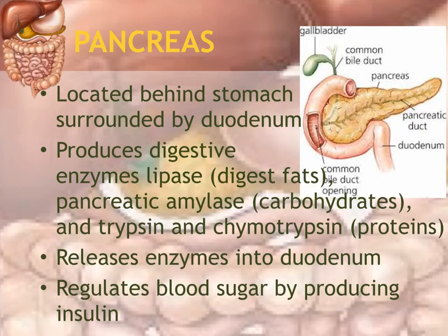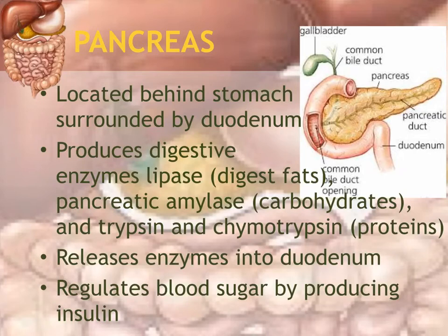The pancreas is a major organ that produces enzymes released into the duodenum. Pancreatic amylase digests carbohydrates like starch. Lipase digests fat or lipids. Trypsin and chymotrypsin are enzymes that digest protein. All of these foods are digested in the small intestine. The pancreas also produces the hormone insulin, which regulates blood sugar, and problems with insulin can lead to diabetes.